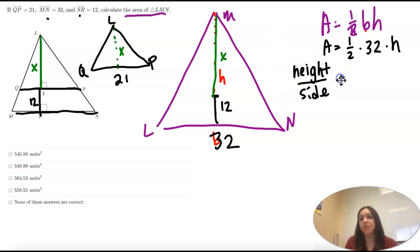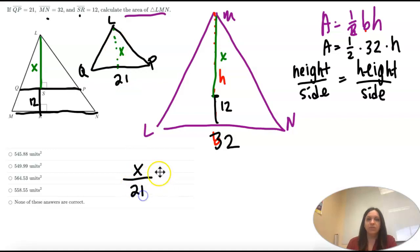Those actually match as well as side to side like we did in our last ones. So let's look at our small triangle. Our height is X. And our side is 21. And on our other triangle, our height is X plus 12. It's that whole side. And then our side is 32.